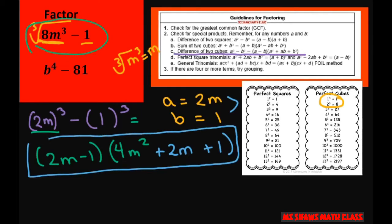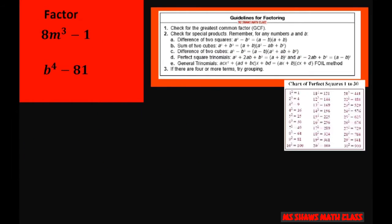All right, on the second one, looks like we have a perfect square. 81 is a perfect square because the square root of 81 is 9, and also b to the fourth is a perfect square because the square root of b to the fourth is b squared. So I can say that my a is b squared.